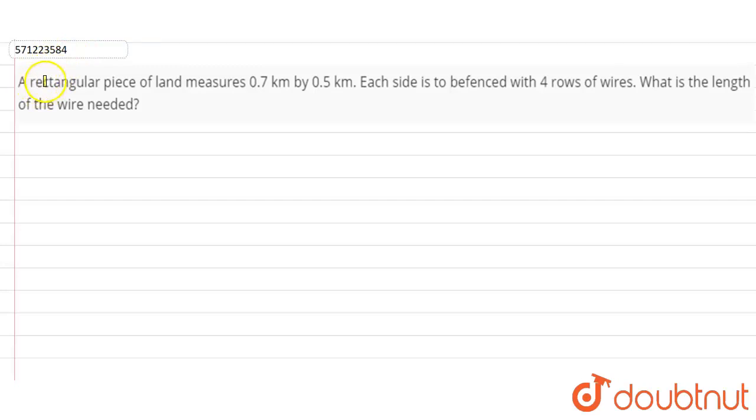have to find that there is a rectangular piece of land that measures 0.7 kilometer by 0.5 kilometers. Each side is to be fenced with four rows of wire and we have to find what is the length of the wire needed.